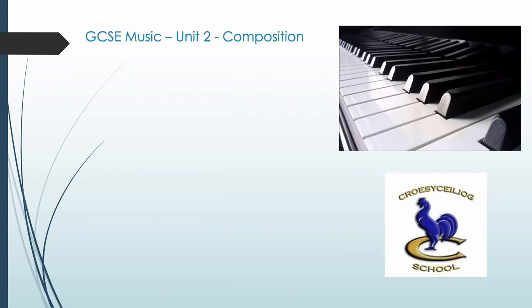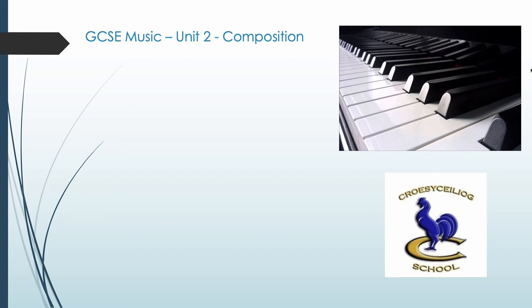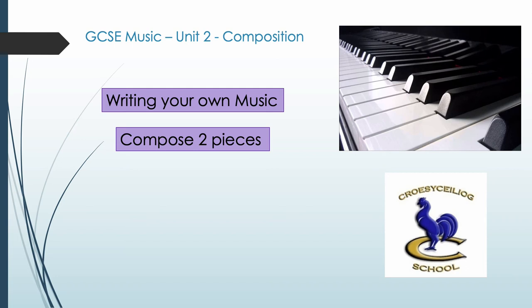Unit 2 is the composition element and students get the opportunity in this module to write their own pieces of music. The unit requires two pieces to be completed and together they must total between 3 and 6 minutes in length. One of the compositions is written to a set brief which is given by the WJEC and can be anything from writing a piano piece for the opening of a museum to writing a rock song that is performed at a local music festival.